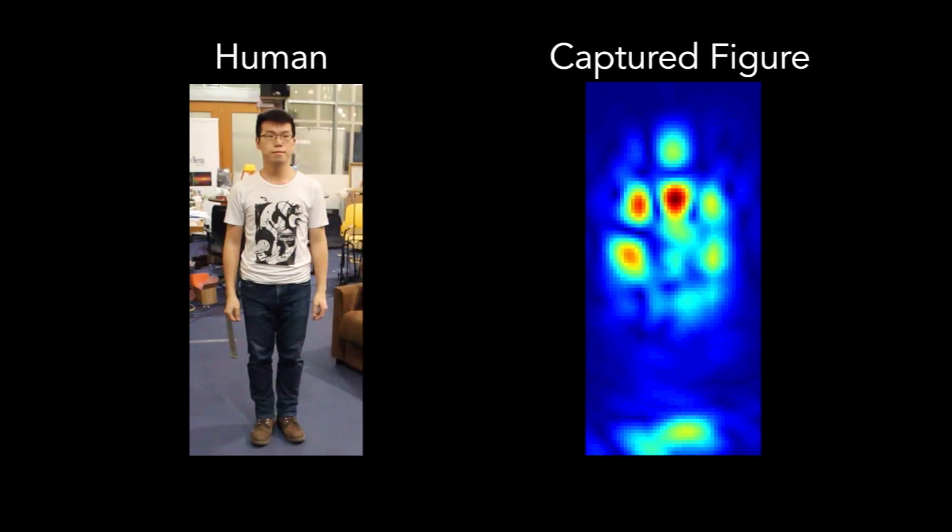In particular, the output on the right shows the background in navy blue and the various human body parts in red, orange, and yellow.